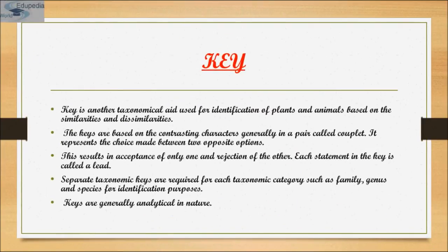A taxonomic key is a device used by biologists for identifying unknown organisms. Keys are constructed so that the user is presented with a series of choices about the characteristics of the unknown organism; by making the correct choice at each step, the user is ultimately led to the identity of a specimen. Keys based on successive choices between only two statements are known as dichotomous keys and are the type preferred by most biologists. Such keys are constructed using contrasting characteristics to divide organisms into smaller and smaller groups until the number of possibilities is eventually reduced to one.